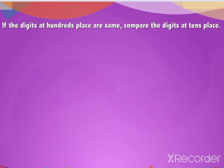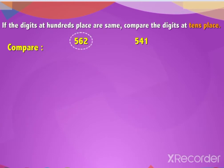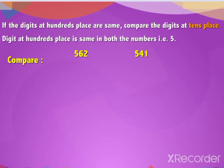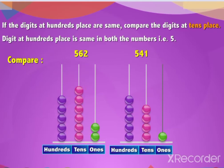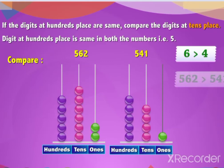If the digits at the hundreds place are the same, compare the digits at the tens place. For example, let us compare 562 and 541. The digit at the hundreds place is the same in both numbers, i.e., 5. Hence, we look at the digits in the tens place. Since 6 is greater than 4, hence 562 is greater than 541.